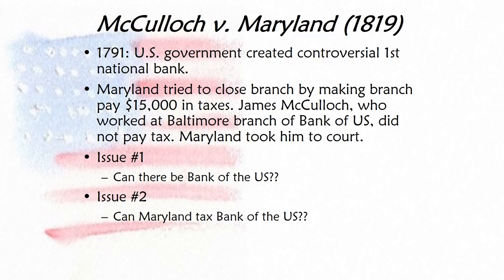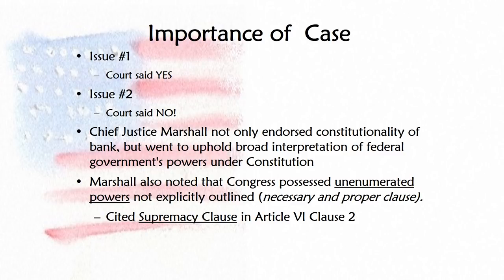The head of that branch, McCulloch, refused to pay the tax, and Maryland sued him. The case was appealed to the Supreme Court. The questions to answer were: first, is the bank constitutional — did Congress have the power to create a bank? Second, can Maryland tax the Bank of the United States? The court, under Chief Justice John Marshall, ruled that Congress was within its power to create a national bank.